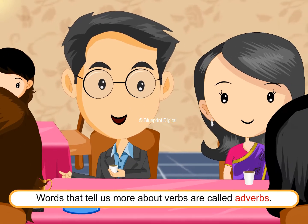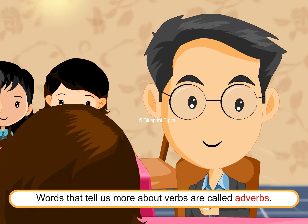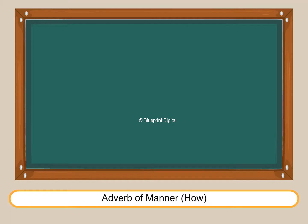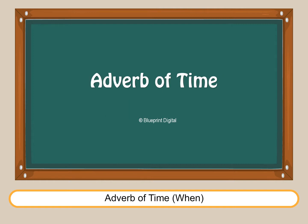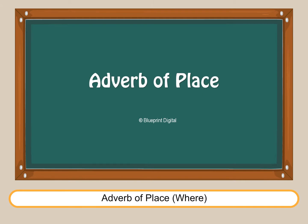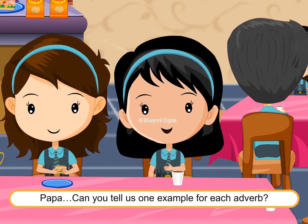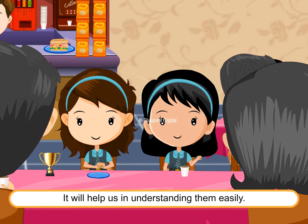Children, words that tell us more about verbs are called adverbs. Adverbs are usually classified into: Adverb of manner — How? Adverb of time — When? Adverb of place — Where? Adverb of frequency — How often? Papa, can you tell us one example for each adverb?